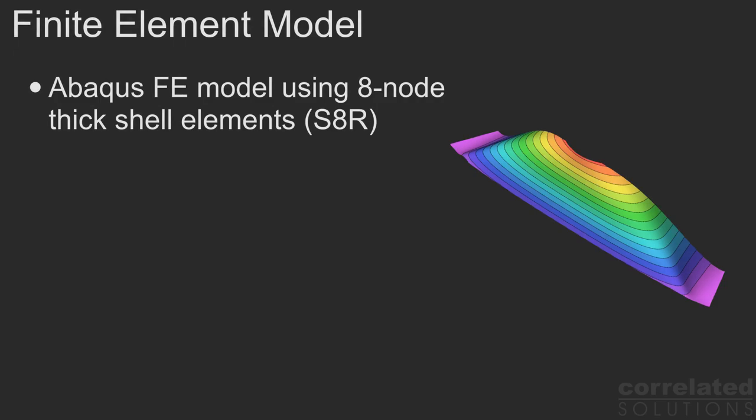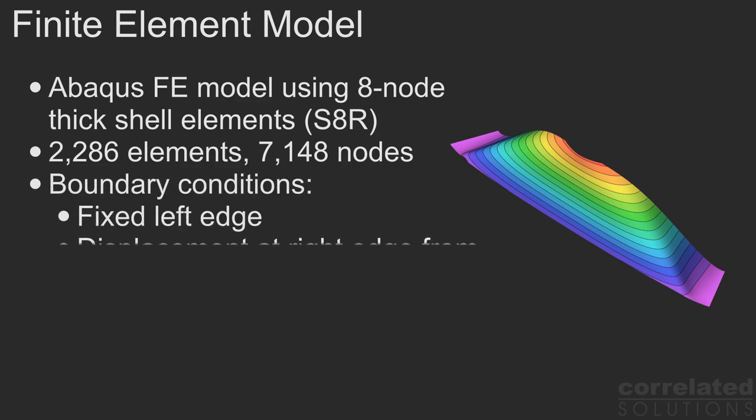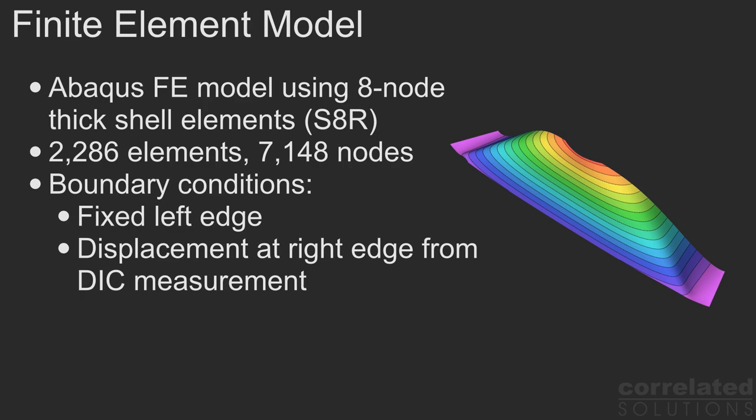The composite toe model was implemented in Abaqus and used about 2,300 quadratic shell elements with just over 7,000 nodes. The specimen's left edge was fixed and a displacement boundary condition was imposed on the right edge. This boundary condition was determined from the DIC measurements.